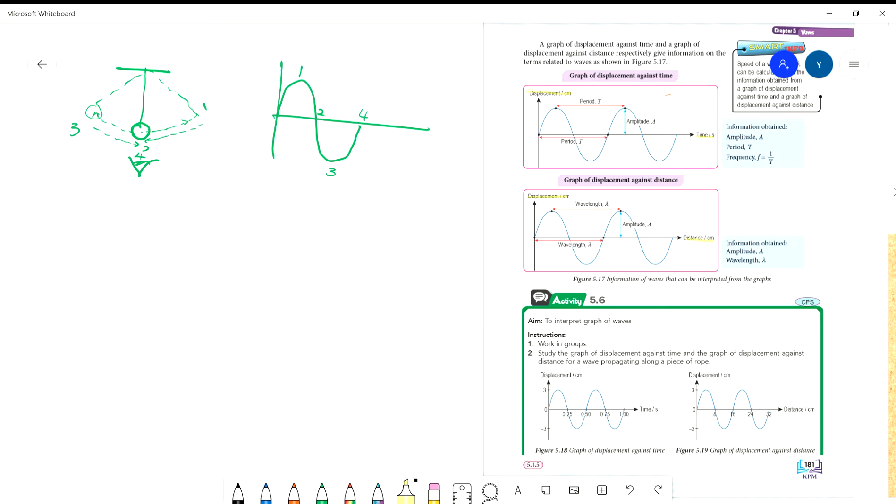What's the difference? Displacement against time shows the displacement of the particle - the particle moves up and down. How much time is taken for it to complete one cycle? At the same time, as it moves, what is the wavelength? This is displacement of the particle; this is distance of the wave. Remember, the particle moves up and down, vibrating. When it vibrates and moves, what is the wavelength?